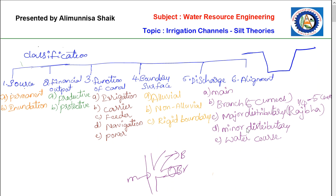The minor distributory has a discharge usually less than 1/4 cumec — less than that of the major distributory. It supplies water to water courses through outlets provided along it. The last type is the water course, also called a field channel — a small channel that ultimately feeds water to the irrigation field, creating the final supply of water.